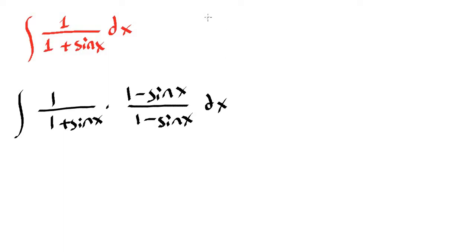Conjugate of any terms are like this. If you have a plus b then the conjugate is a minus b. If you have a minus b then the conjugate is a plus b. So for these type of integrals our attempt is to multiply both top and bottom by the conjugate of the denominator.